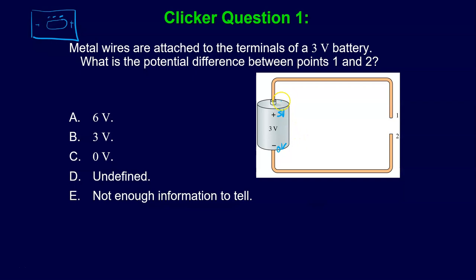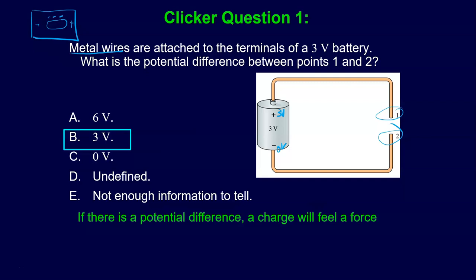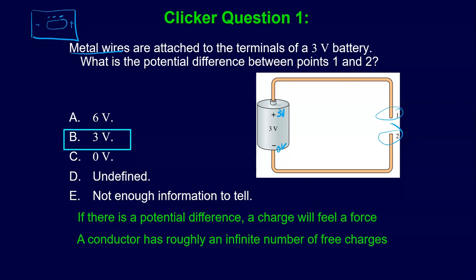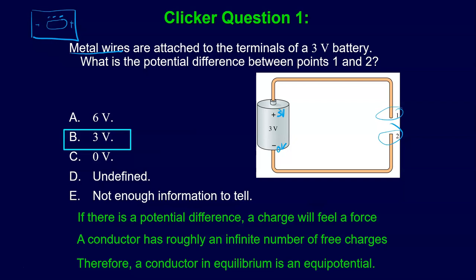Here we're connecting two metal wires to the ends of the three-volt battery, and I want to know what the potential difference on these endpoints will be at equilibrium. Here's how I rationalize this: if there is a potential difference, a charge will feel a force. When you first hook up that wire, there will be potential differences in the wire, and charges will feel a force. This is a metal, so it has roughly an infinite number of free charges. Therefore, a conductor in equilibrium will be at equal potential. The charges will move until that conductor is all at the same potential - otherwise charges would still be moving. Every point on this wire is three volts, and every point on this wire is zero volts. So the difference would be three volts.